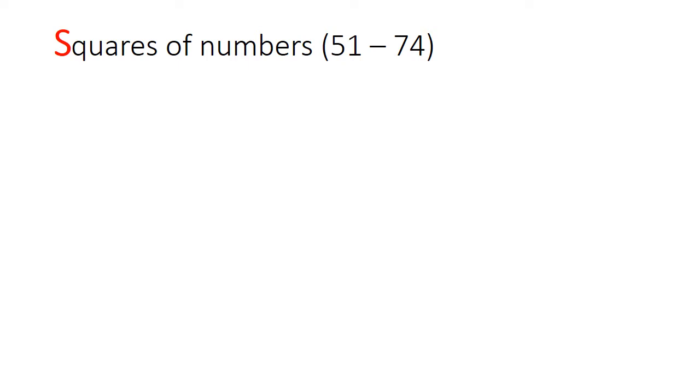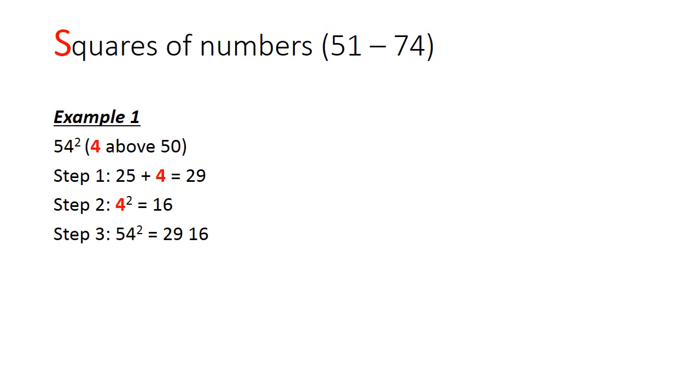Now let me take you through some quick rules for squaring two-digit numbers. These rules are premised that you have already memorized the square numbers from 1 squared until 24 squared. Let's first look at square numbers from 51 to 74. If I were to square 54, I would first count how far 54 is away from 50.